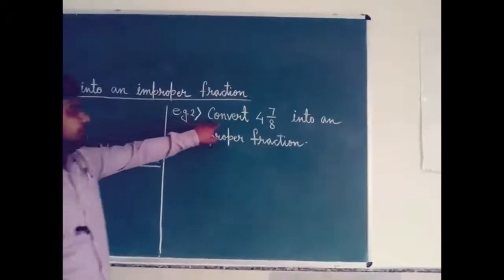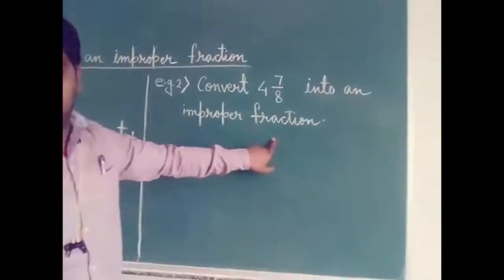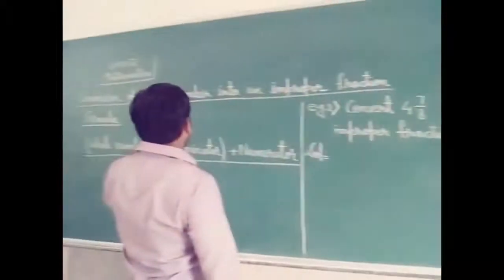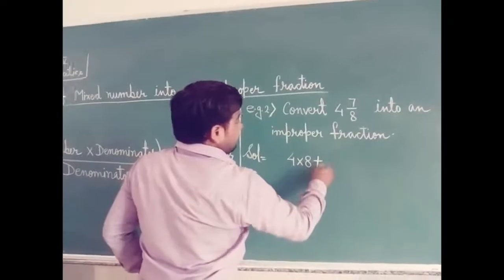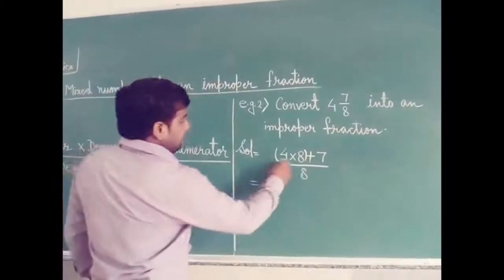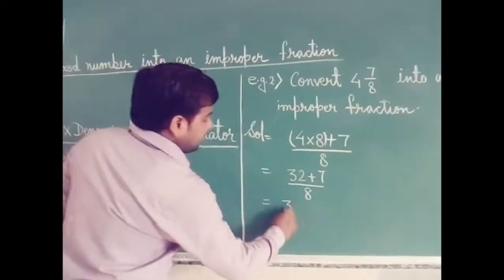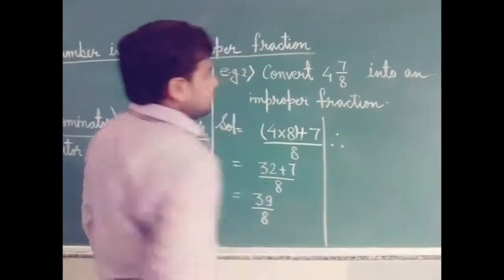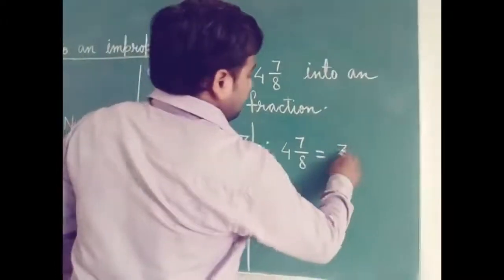See one more example. Convert 4 whole 7 by 8 into an improper fraction. Multiply whole number by denominator: 4 into 8, plus numerator 7, divided by denominator 8. 4 into 8 gives 32, plus 7 by 8, which is 39 by 8. Therefore, 4 whole 7 by 8 is equal to 39 by 8.